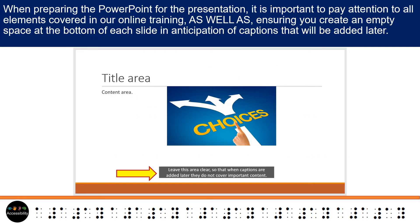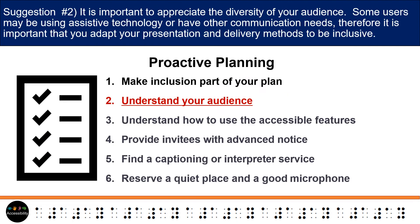When preparing the PowerPoint for the presentation, it is important to pay attention to all elements covered in our online training, as well as ensuring you create an empty space at the bottom of each slide in anticipation of captions that will be added later. Suggestion number two: it is important to appreciate the diversity of your audience. Some users may be using assistive technology or have other communication needs, therefore it is important that you adapt your presentation and delivery methods to be inclusive.